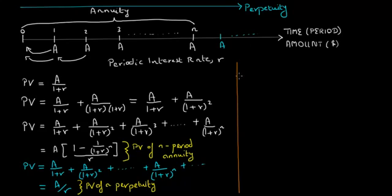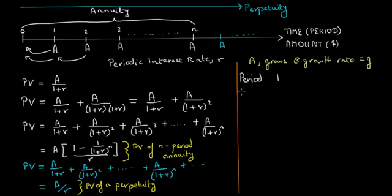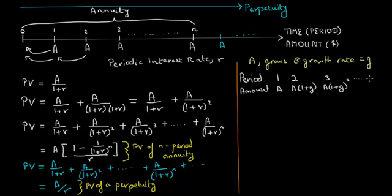So far, in calculating the present value of both annuity and perpetuity, we have assumed a constant periodic payment of A dollars. Now what if this payment grows at a constant growth rate G? At the end of period 1 you receive A dollars, but in period 2 this amount grows by factor (1 plus G), so the amount received is A times (1 plus G). In period 3 it becomes A times (1 plus G) squared, and so on, until period N when the amount equals A times (1 plus G)^(N minus 1). This is called a growing annuity.